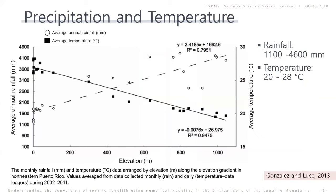The study area experiences a tropical climate. The range of mean annual rainfall is around 1 to 5 meters per year, and the mean annual temperature is 22 to 28 degrees Celsius. We found a regression equation with elevation and use this regression equation in the model.